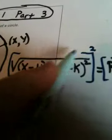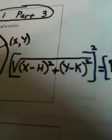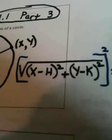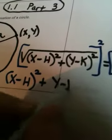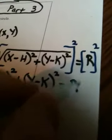Now, over here, the square root and the square are inverse operations, so they cancel each other out. So, that leaves me with (x-h)² and it leaves me with a plus. (y-k)² is equal to... And then R to the second power is R².